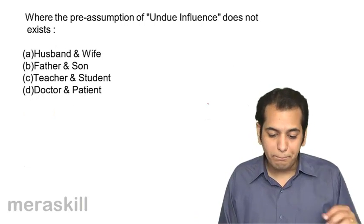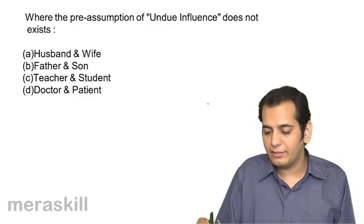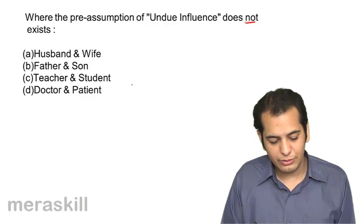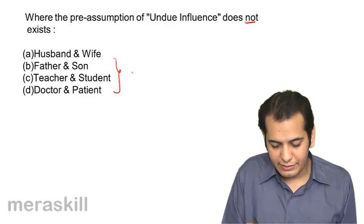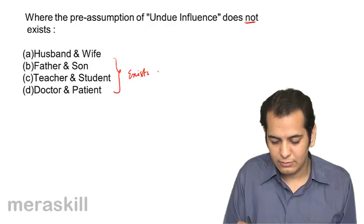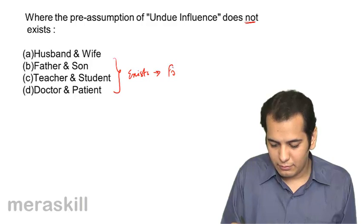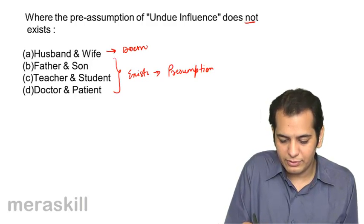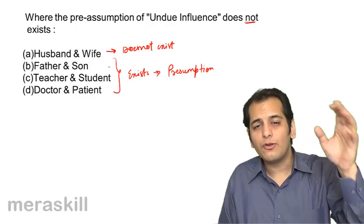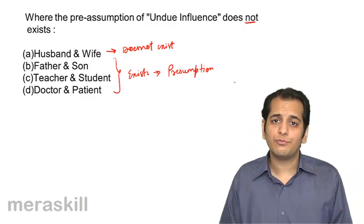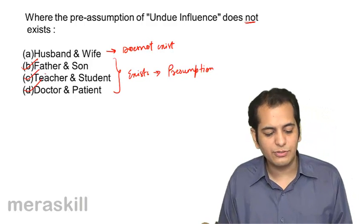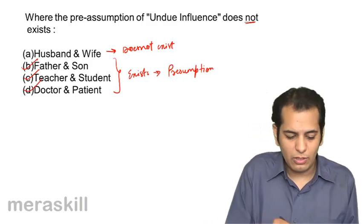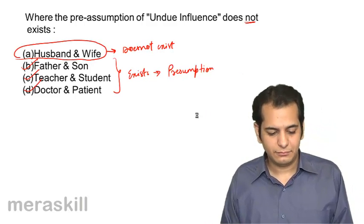Where the presumption of undue influence does not exist: A husband and wife, B father and son, C teacher and student, D doctor and patient. In cases of father and son, teacher and student, and doctor and patient, the presumption exists — the court will assume the contract was entered on grounds of undue influence. But for husband and wife, the court will not assume this. So the answer is A: husband and wife.